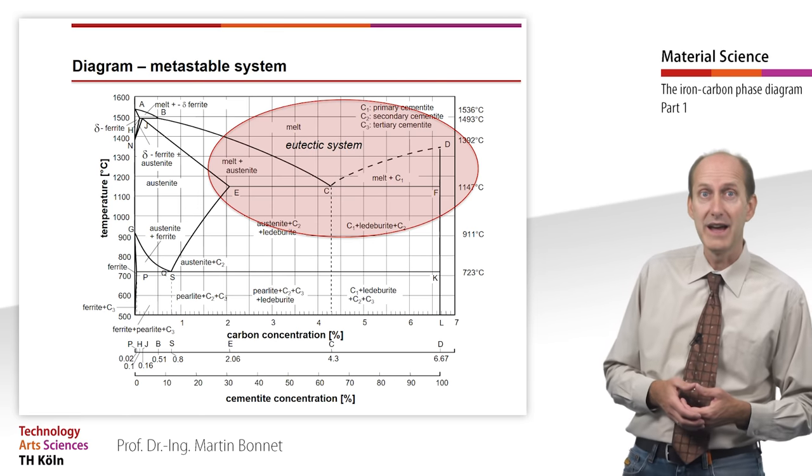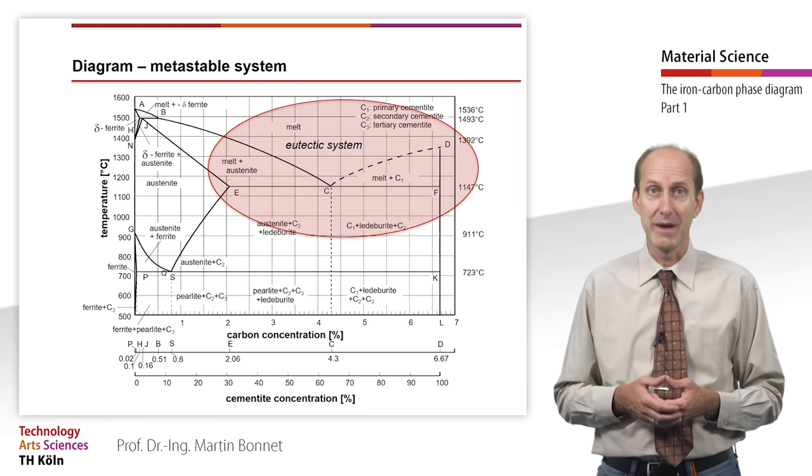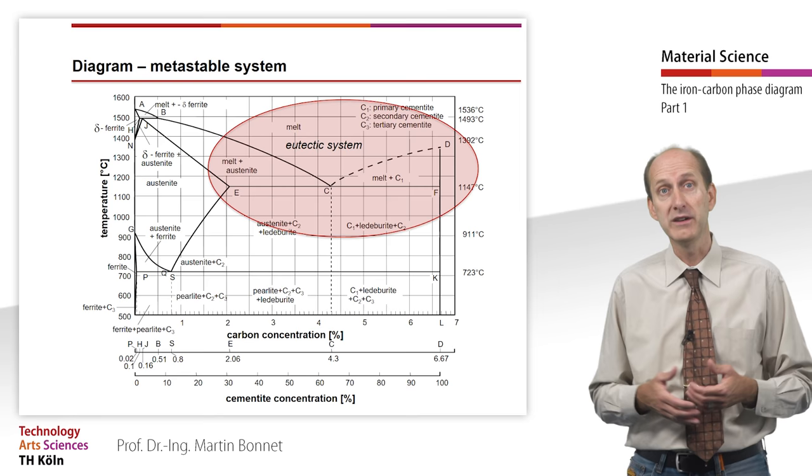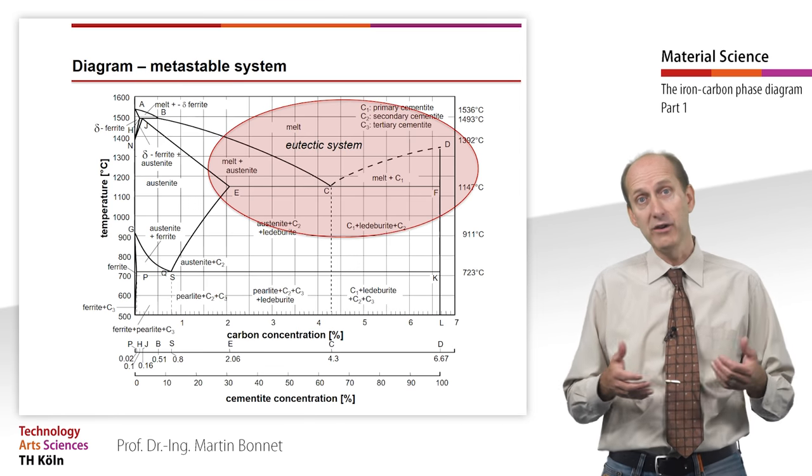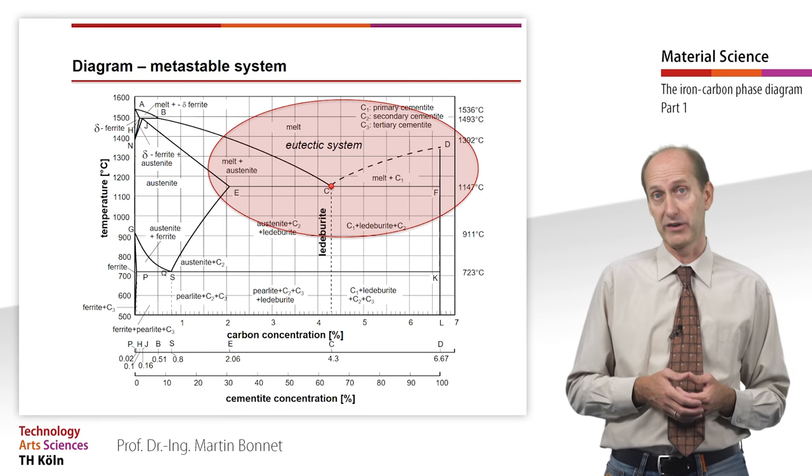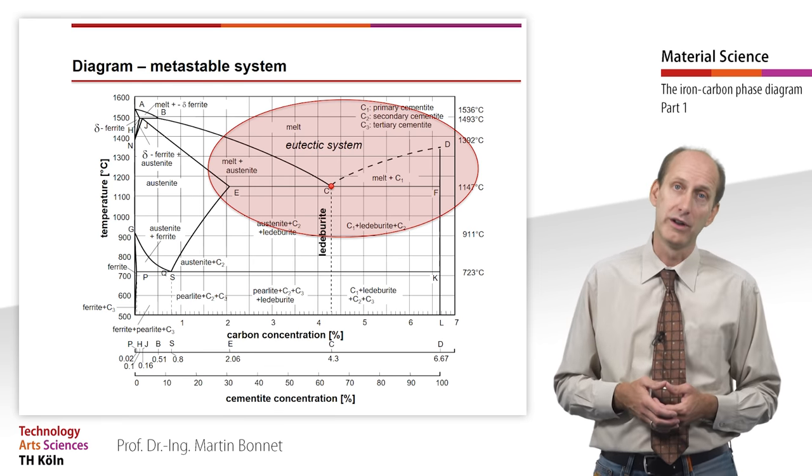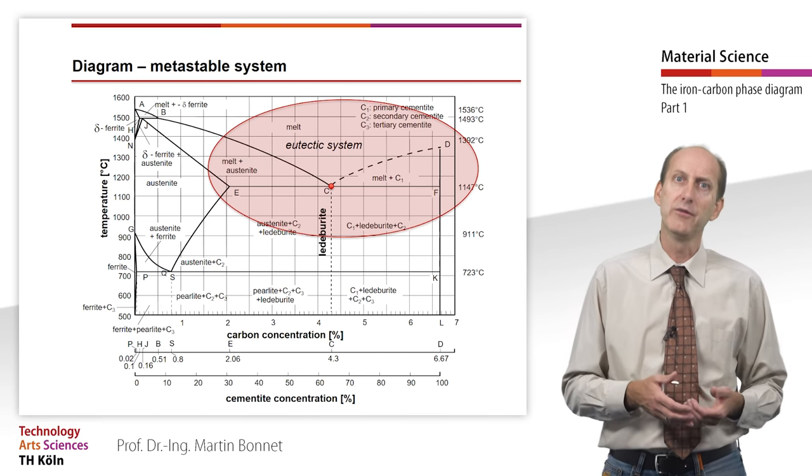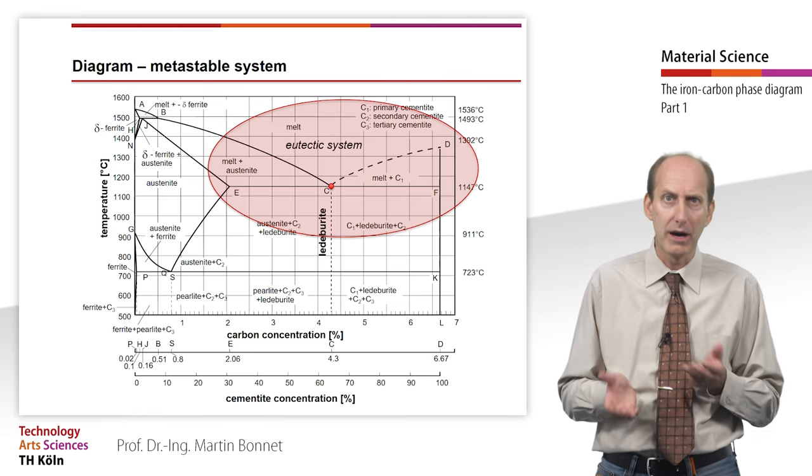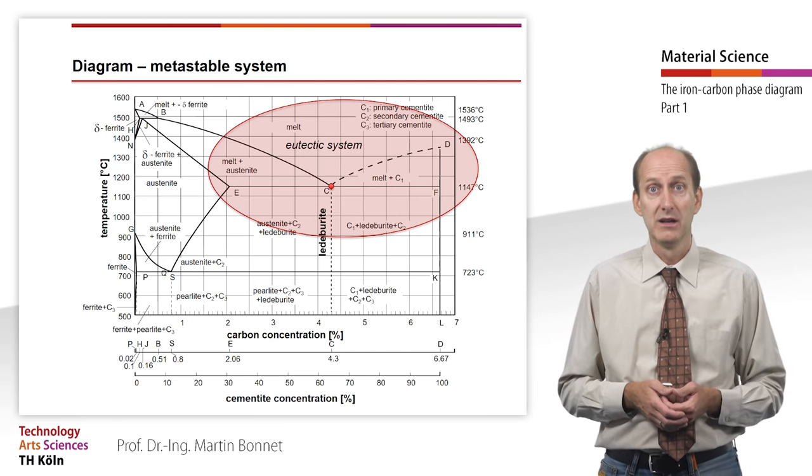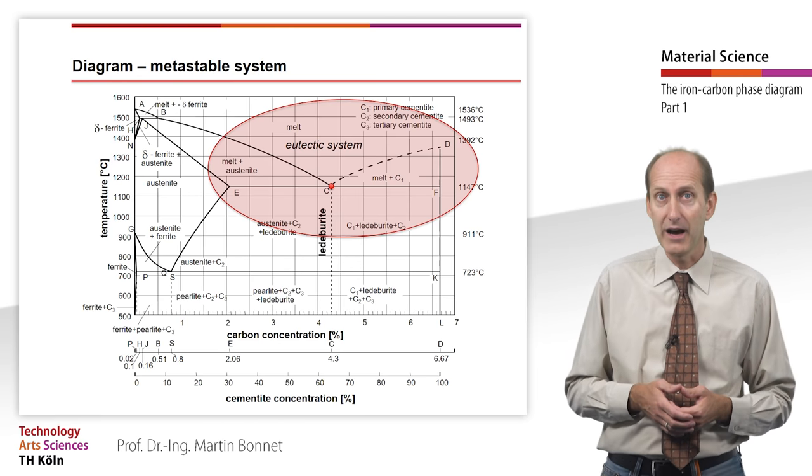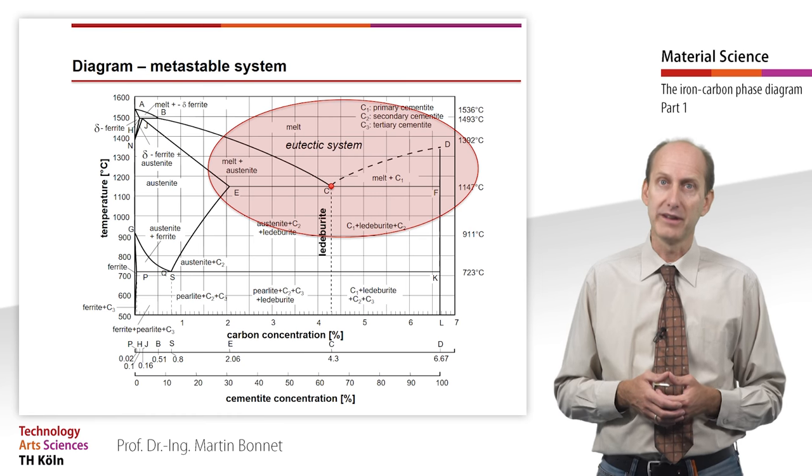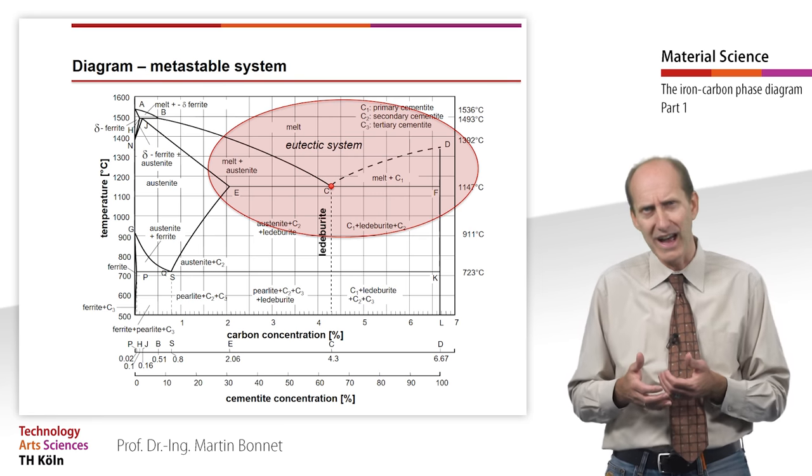We recognize the region at high temperatures and a high cementite mass content as a system with decreasing limited solubility in the solid state. In other words, it is an eutectic system. For the iron-carbon system, the eutectic point is at 4.3% carbon and a temperature of 1147 degrees Celsius. If we imagine the lever arm drawn into the diagram, we can derive that austenite and cementite each make about half of the eutectic structure. This was named Ledeburite after the person who discovered it, the metallurgist Karl Heinrich Adolf Ledebur. Due to its high cementite content, Ledeburite is strong and hard, but also brittle.